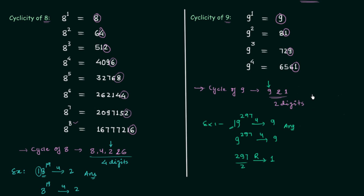This is the normal procedure to find out the digit at the units place. But when there are only 2 digits in the cycle, there is no need to find out the remainder — you don't need to divide the power by the number of digits in the cycle. Because you can see: when the power is odd, we have 9 at the units place, and when the power is even, we have 1 at the units place. So you can simply find out whether the power is even or odd. Since 297 is an odd number and when the power is odd we have 9 at the units place, you can directly write down the answer.